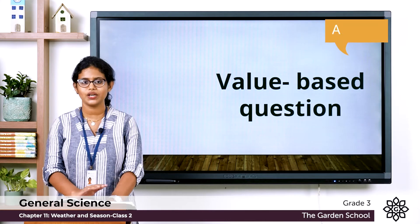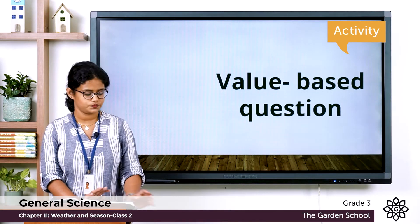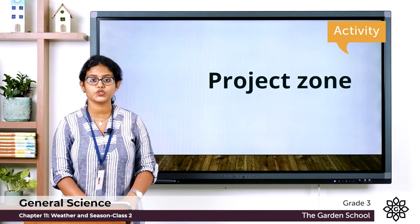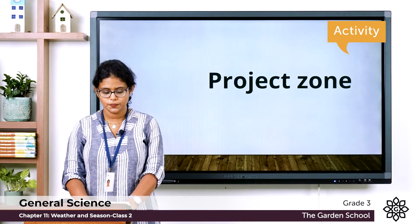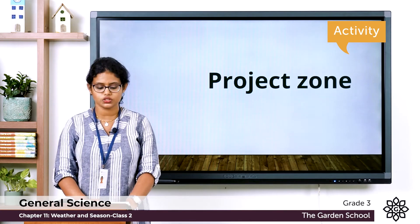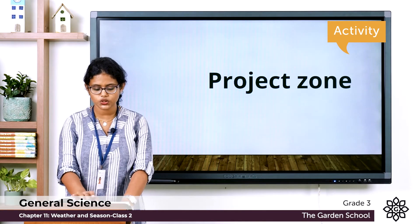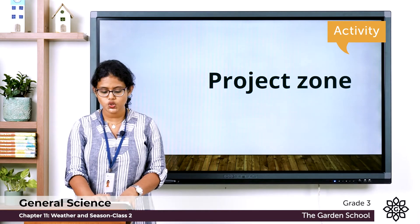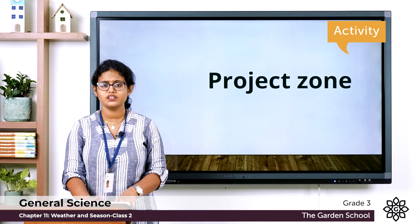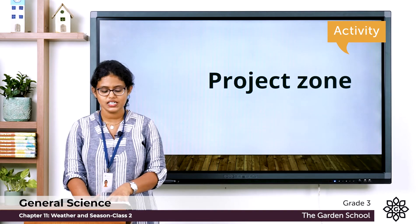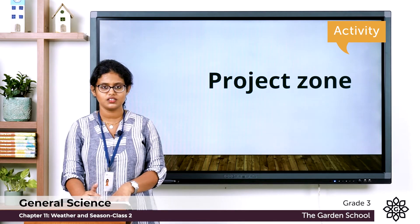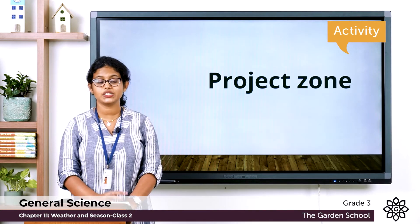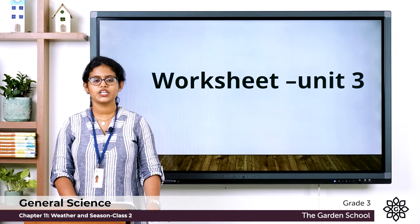Now let's move to the activity zone. There is an activity for you — just go through it. Next is the project zone: you have to observe the weather conditions from Monday to Friday. Color the circles to record the conditions you observed each day. There are also three questions to fill in below. I want everyone to do this activity. Once you are done, take a picture and send it to Microsoft Teams.